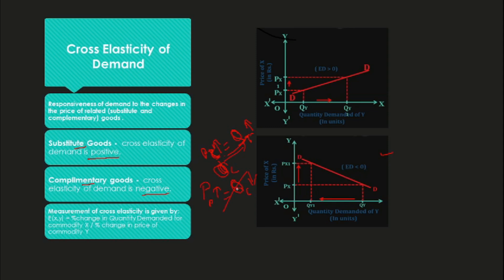In summary, for cross elasticity of demand: in the case of substitute goods there is a positive relationship, and in the case of complementary goods there is a negative relationship. It is important to remember that here we are discussing the price of one commodity and the quantity of another related commodity. The measurement formula is: percentage change in the quantity of product X divided by the percentage change in the price of commodity Y. With this, our section on analysis of market demand is completed. Thank you.